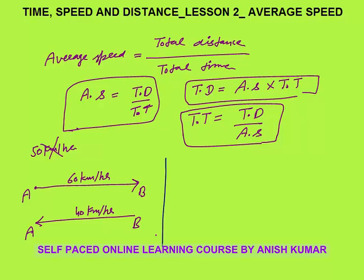Average speed equals total distance upon total time. We don't know the distance, so let's assume the one-way distance is d. The total distance for the round trip is d + d = 2d, where d is from A to B and d is from B to A.